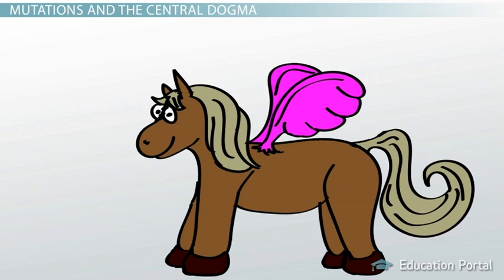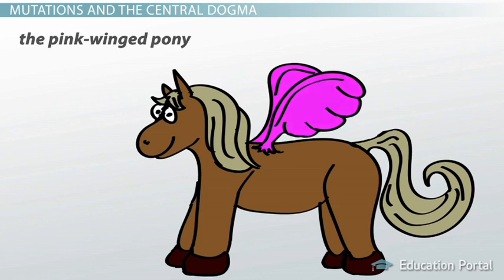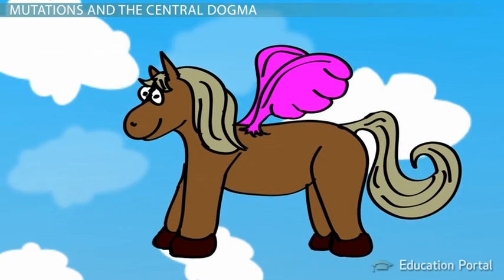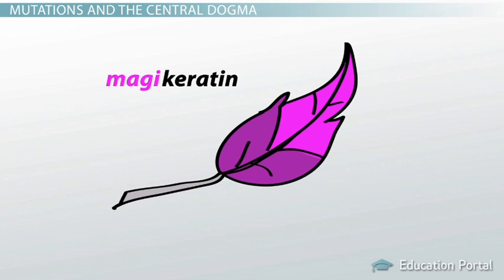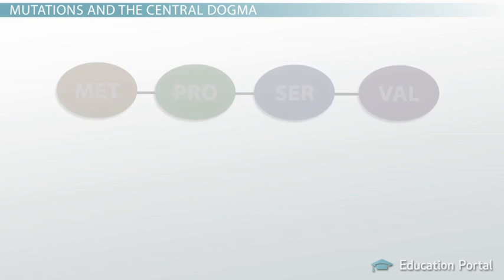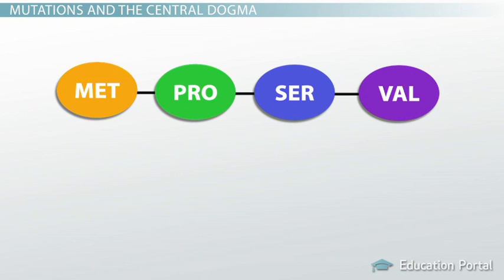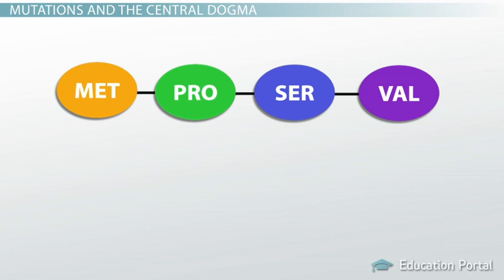Let's take a look at how different mutations can affect a hypothetical organism — we'll call it the pink-winged pony. It's a pony with big pink wings, and it can fly. The feathers on its wings are made of a special protein called magic keratin, which gives the pony its magical flying ability. Magic keratin is a protein made of a single polypeptide — a single chain of four amino acids: methionine, proline, serine, and valine.